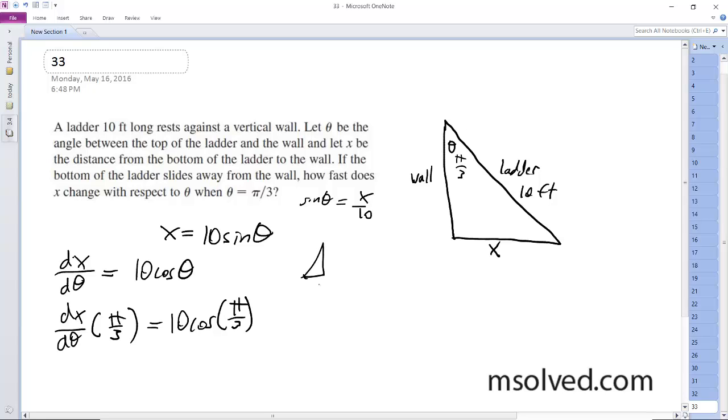So pi over 3 is 1, 2, root 3. So we get 1 half. So 1 half times 10 is equal to 5 feet per radian change, roughly.